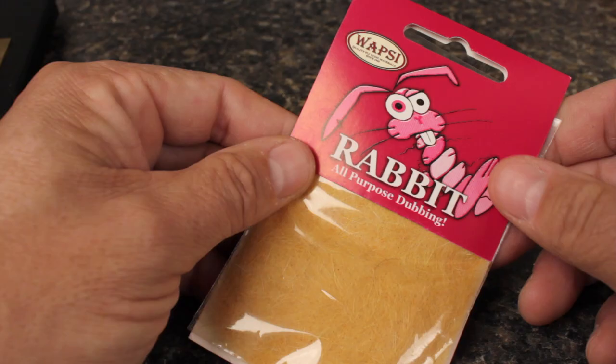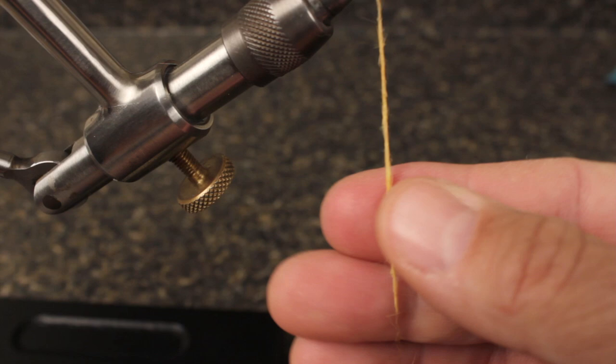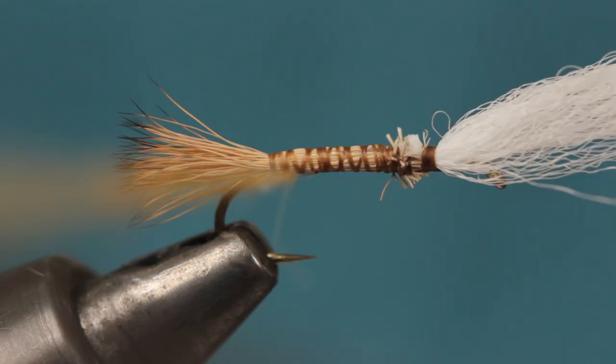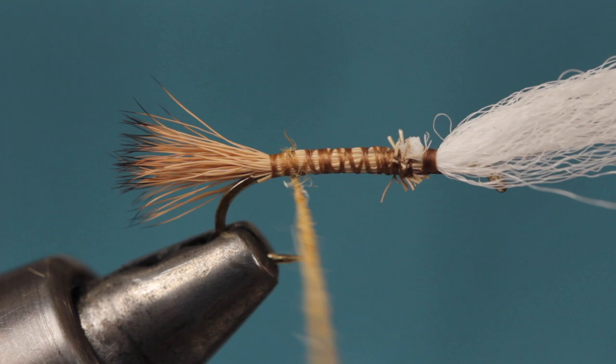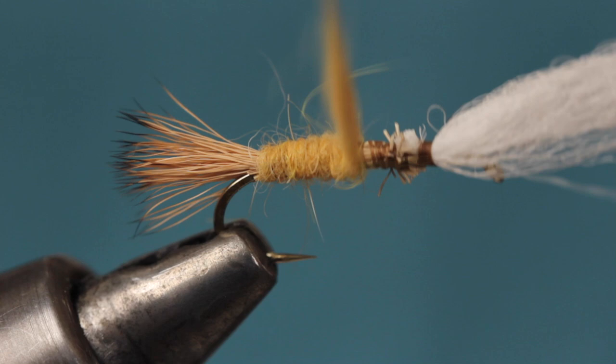Just about any kind of dubbing can be used for the body. Here I've chosen rabbit in a ginger color. Establish a nicely tapered noodle about three inches long on your tying thread. Start taking wraps so the dubbing begins right at the base of the tail and continue taking wraps forward to form an evenly tapered body. Leave some space behind the base of the post as more materials need to be tied in at this location.